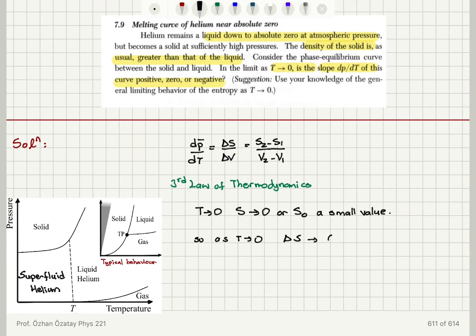the entropy change will be going to zero minus zero for the two phases, or S0 minus S0 for the two phases. So therefore, we will find that dP/dT must be approaching zero. So the answer is the slope has to be zero.